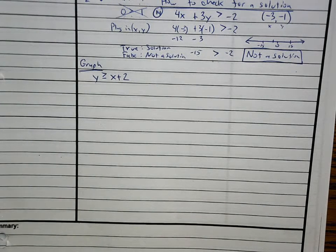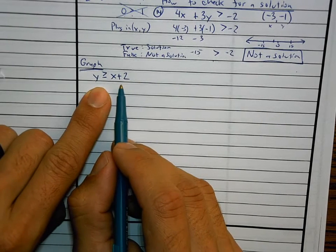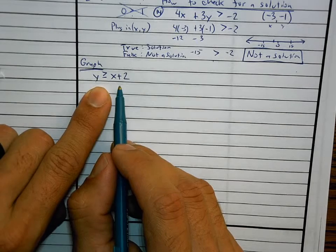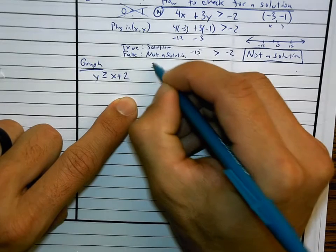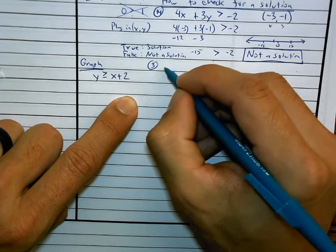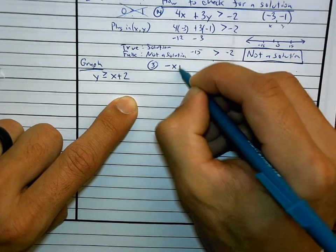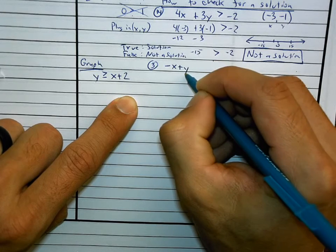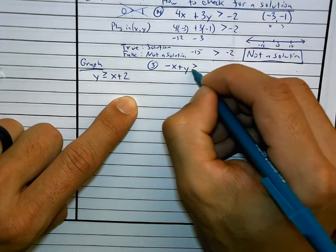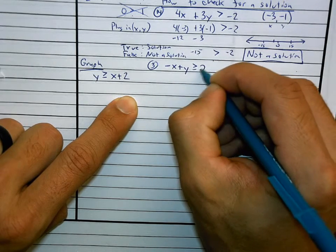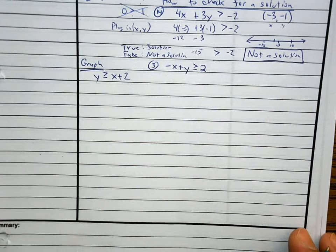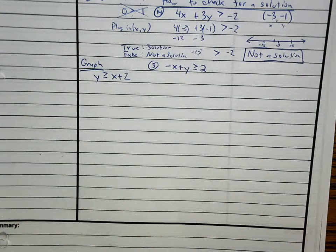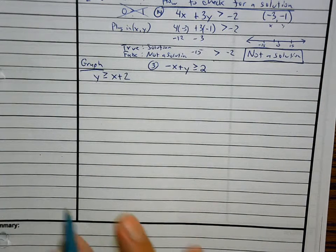Number three says negative x plus y is greater than or equal to 2. This is number three — I just haven't done anything to it yet.